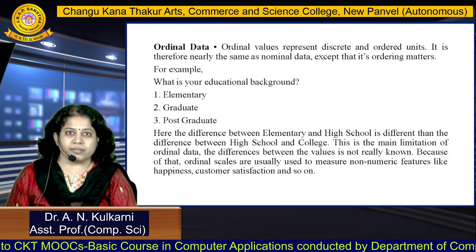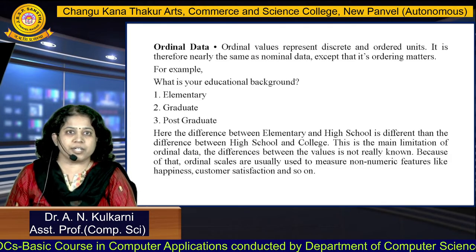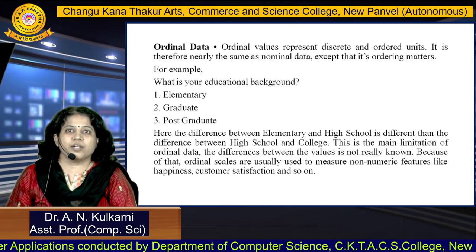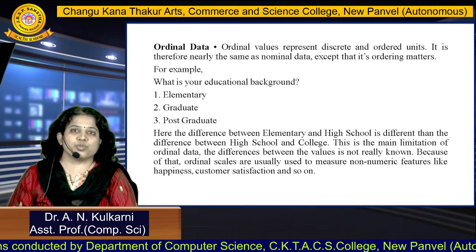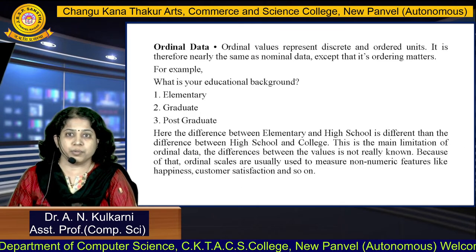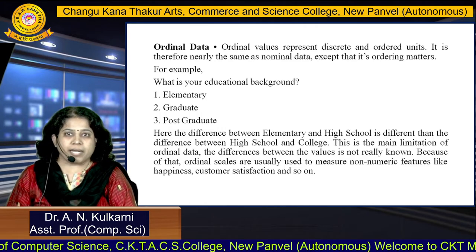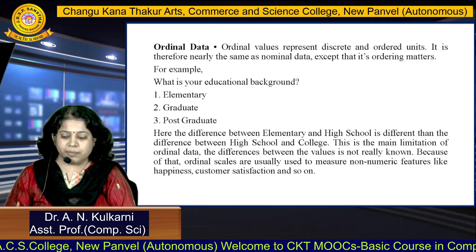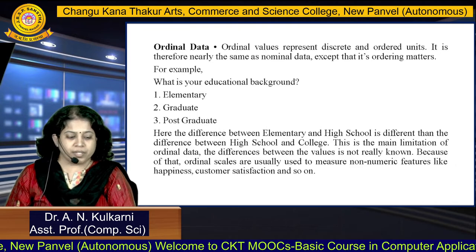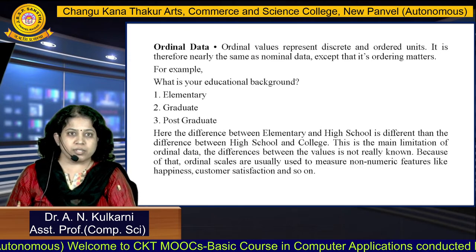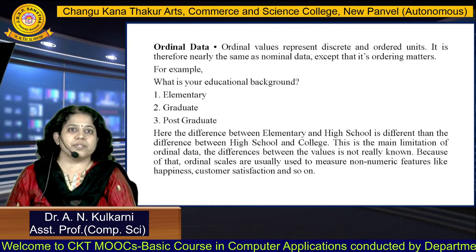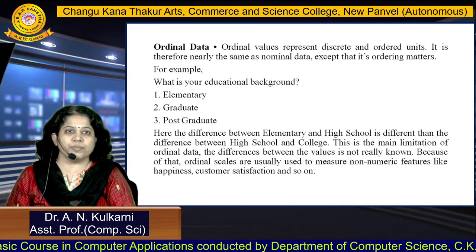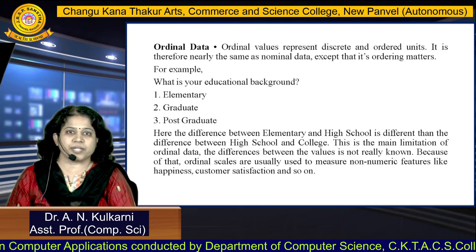Next is ordinal data. Ordinal values represent discrete and ordered units — ordering is very important in ordinal data. For example, the question 'What is your educational background?' — the answer may be elementary, graduate, or post-graduate. Here ordering matters. The main limitation of ordinal data is that the difference between values is not really known. Because of that, ordinal scales are usually used to measure non-numeric features like happiness, customer satisfaction, and so on.